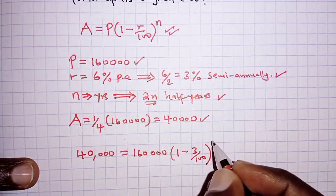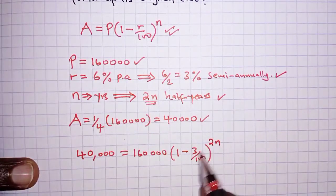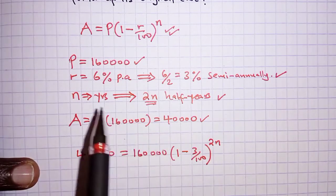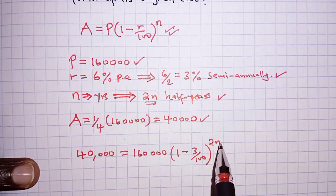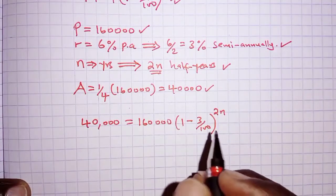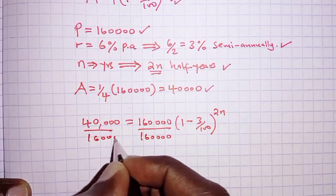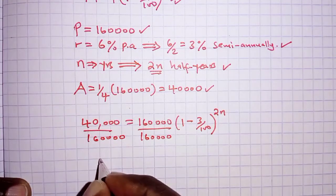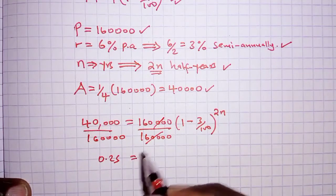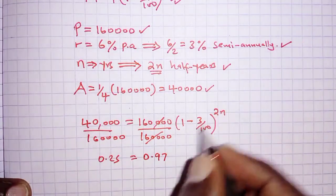Continuing the substitution: 160,000 into 1 minus the rate — the rate is 3 percent, so 3 over 100 — raised to the time, which is 2n. Remember, these values arise because this is determined semi-annually: instead of six percent we use three percent, and instead of n years we use 2n half years. We then divide both sides by 160,000, and the left-hand side simplifies to 0.25. On the right-hand side, 160,000 cancels, giving us 0.97 raised to 2n.